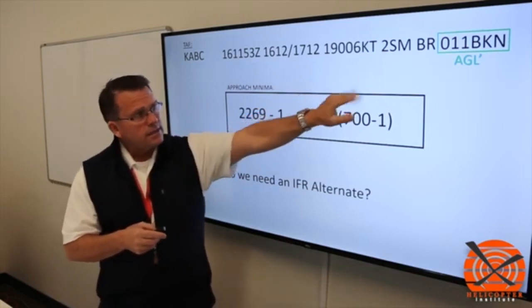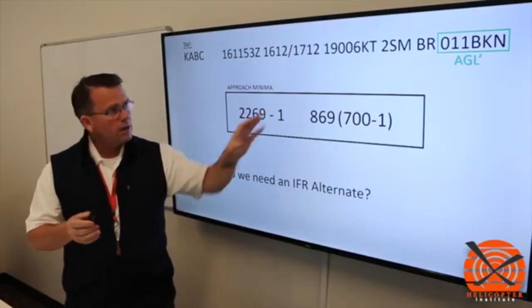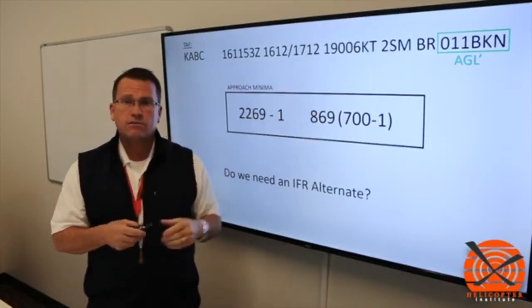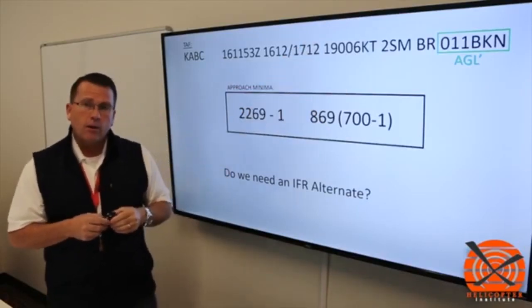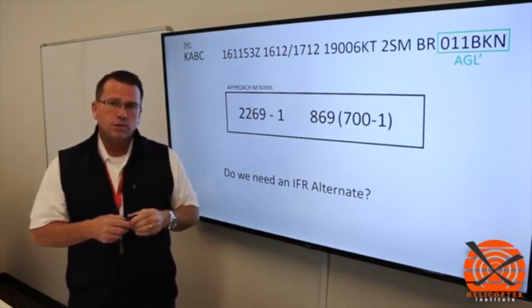However, we look at the ceilings and it says it has 1,100 foot broken. Okay, so we know what the airport has and we know that that's an AGL value, so it's more than 1,000 foot above airport elevation. However, the question is, do we have the 400 feet above the lowest applicable approach?